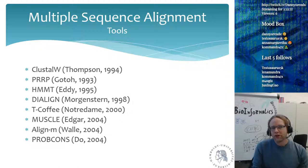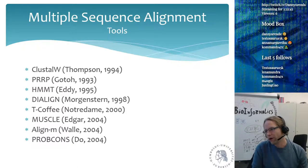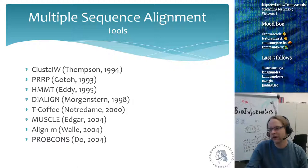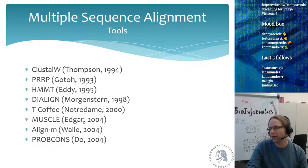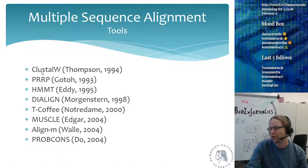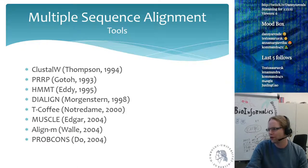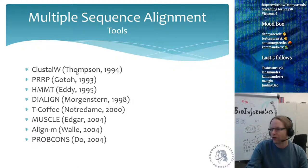There are many different MSA tools: ClustalW was invented in 1994; HMMER, which uses HMM technology, was developed in 1995; MUSCLE was developed about 10 years after ClustalW and is more optimized and relatively fast; and ClustalOmega is the new version of ClustalW from around 2014–2015 with an improved underlying algorithm.